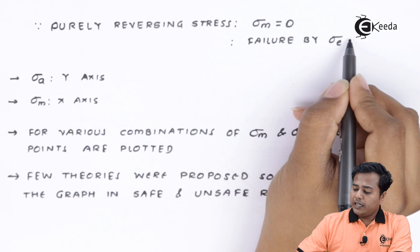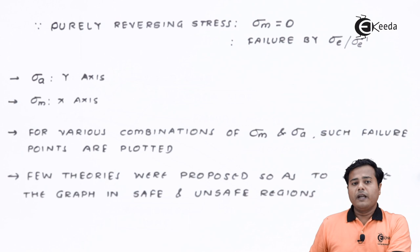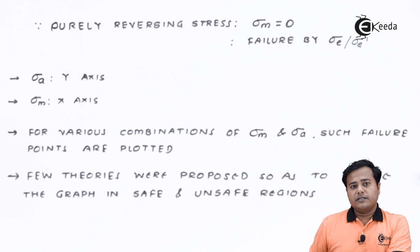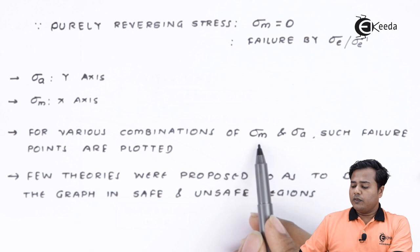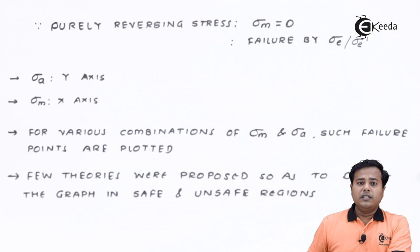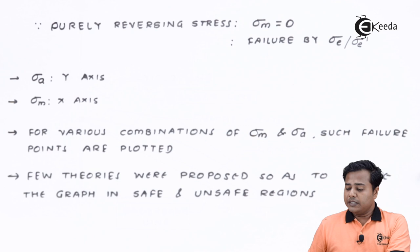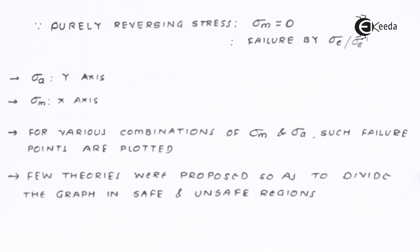Sigma_a, which is the amplitude stress, is plotted on the y-axis, and mean stress sigma_m is plotted on the x-axis. For various combinations of mean stress and amplitude stress, such failure points are plotted. These points were plotted for multiple readings, considering minimum and maximum stress, which gives us the amplitude and the mean stress values.